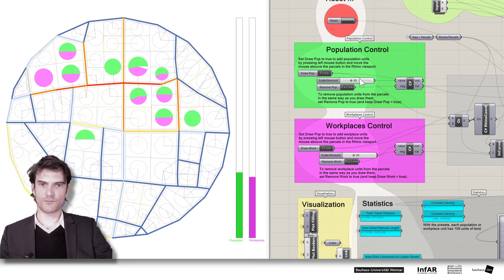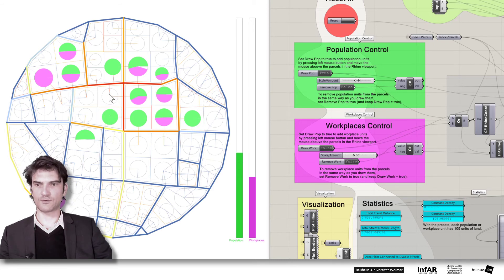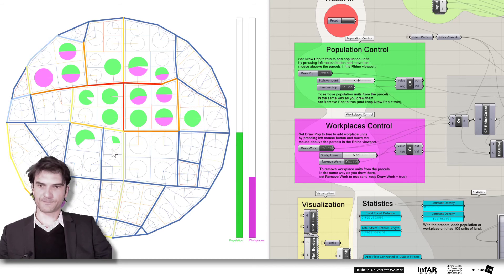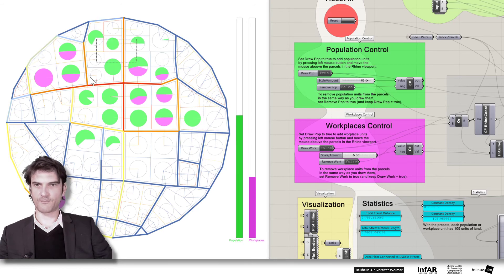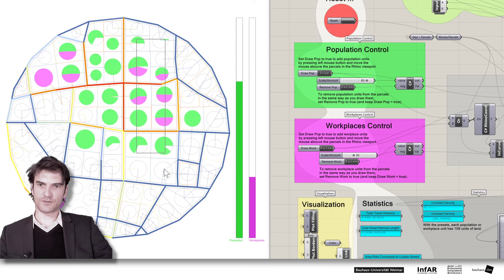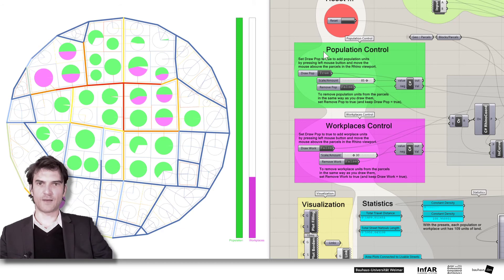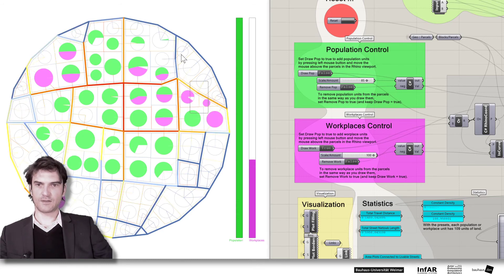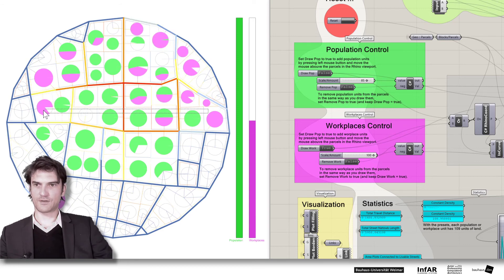And while you draw them you see the bars at the right side they are growing. So you distribute more and more units. If you want to do it faster just increase this scaling value. Then you draw more units per mouse move. Then you can do it faster. And so let me just make it very fast and generate some kind of pattern here. So just that you get an idea what you shall do. So your population bar have to fill up to 100% and then you can draw the workplaces as well by going around here.